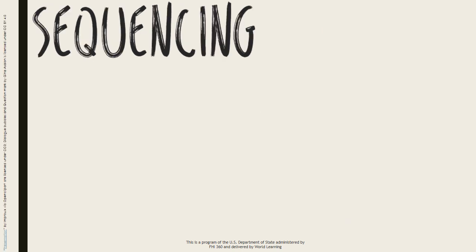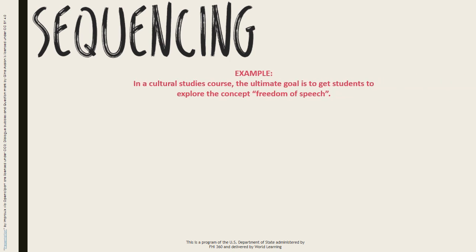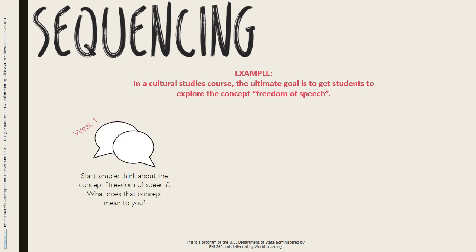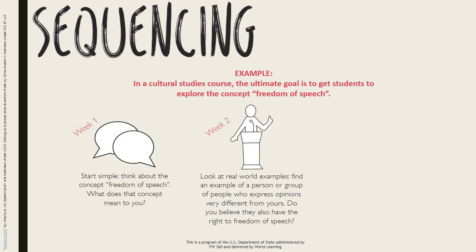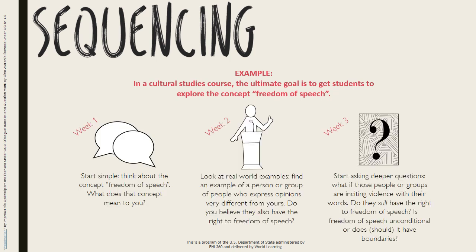Sequencing is particularly important in teaching critical thinking. Because critical thinking is thinking that is more careful than normal, teachers really have to break activities down into small, achievable parts and slowly build up to more advanced thinking.